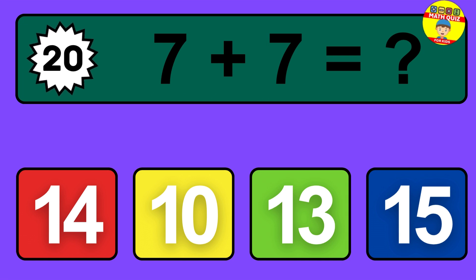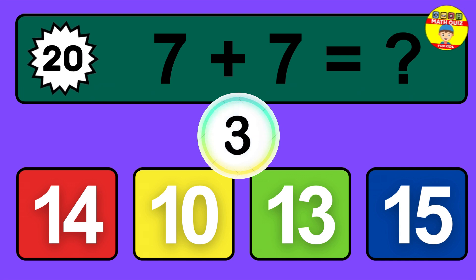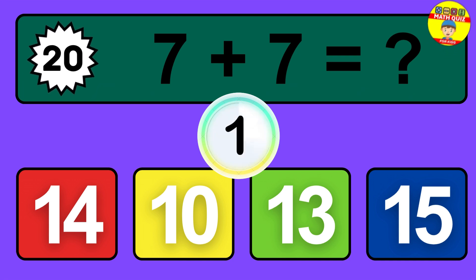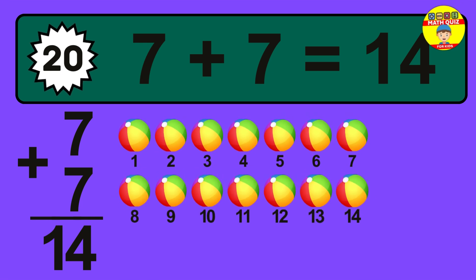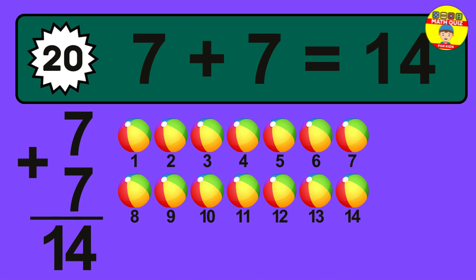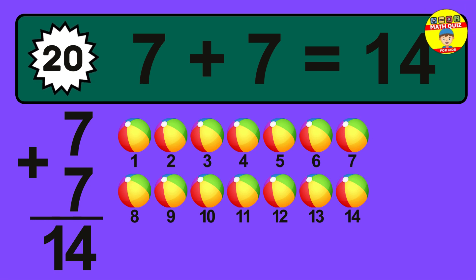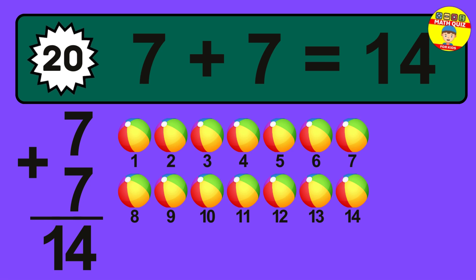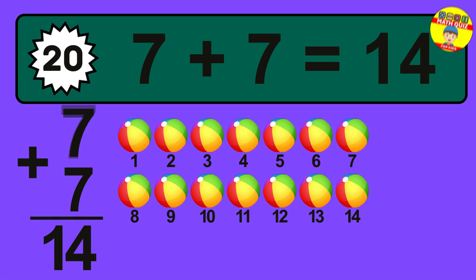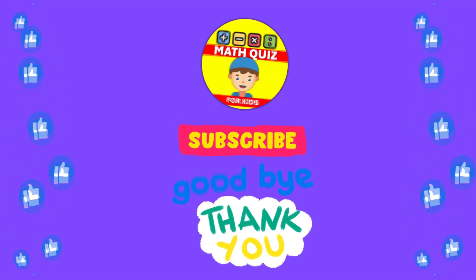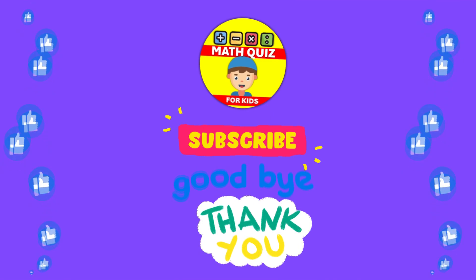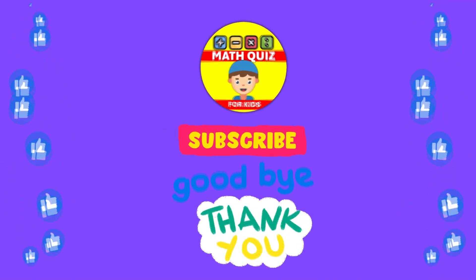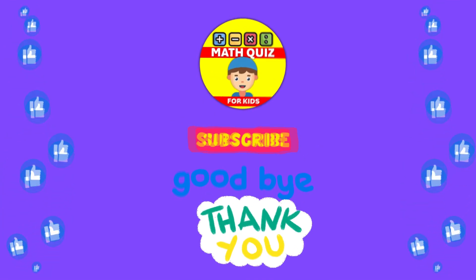Question 20. 7 plus 7 equals what? The answer is 7 plus 7 is 14. Let's count it: 1, 2, 3, 4, 5, 6, 7, 8, 9, 10, 11, 12, 13, 14.